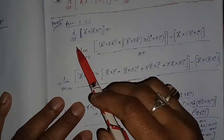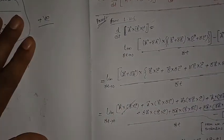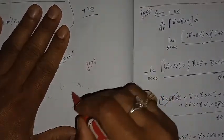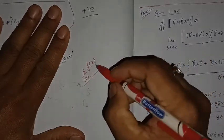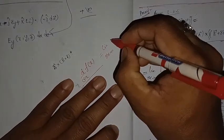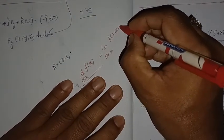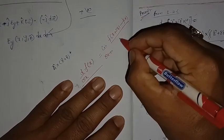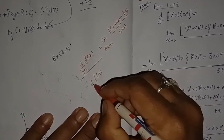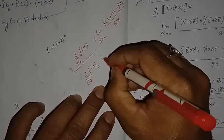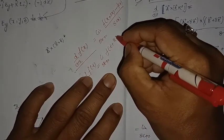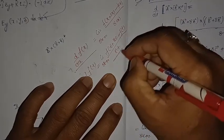Now we know that if we have to differentiate a function, suppose f(x), then d/dx of f(x) is written as limit as Δx tends to 0 of [f(x + Δx) − f(x)] / Δx. Similarly, if we have a function f(t), then differentiation with respect to t will be limit as Δt tends to 0 of [f(t + Δt) − f(t)] / Δt.